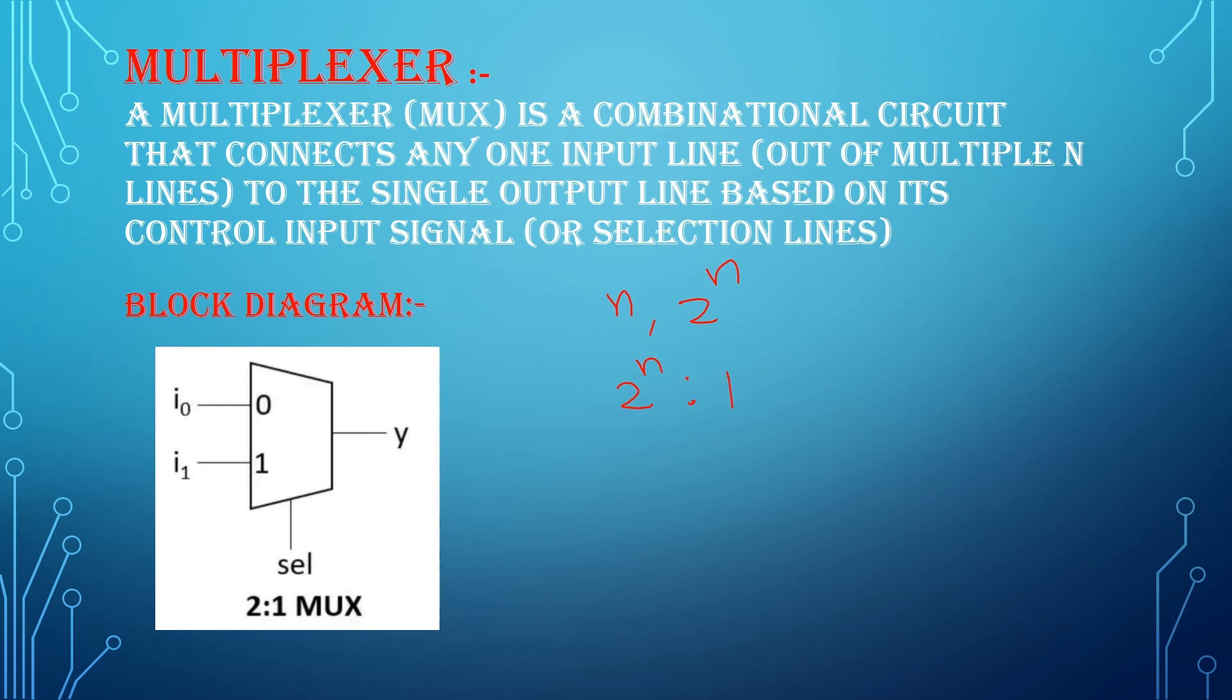Suppose if n is equal to 1, so 2 power 1 is to 1. Here 1 is selection line, 2 is the input lines, and here 1 is the output line.